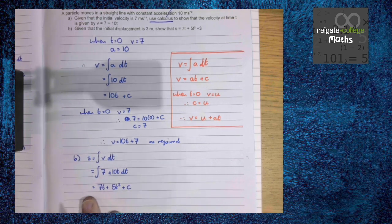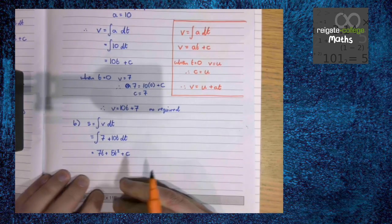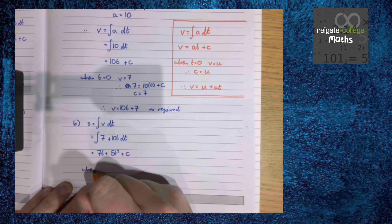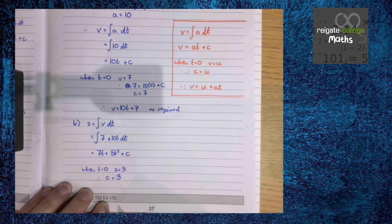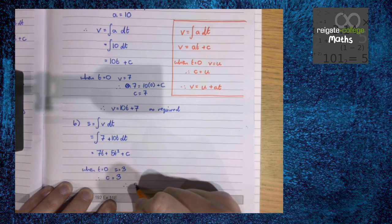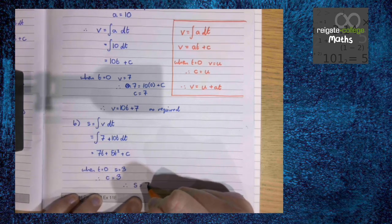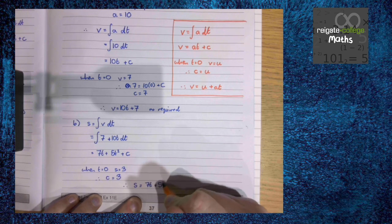The initial displacement is 3, so we know that when t equals 0, s equals 3, meaning c equals 3. Therefore, s equals 7t plus 5t squared plus 3.